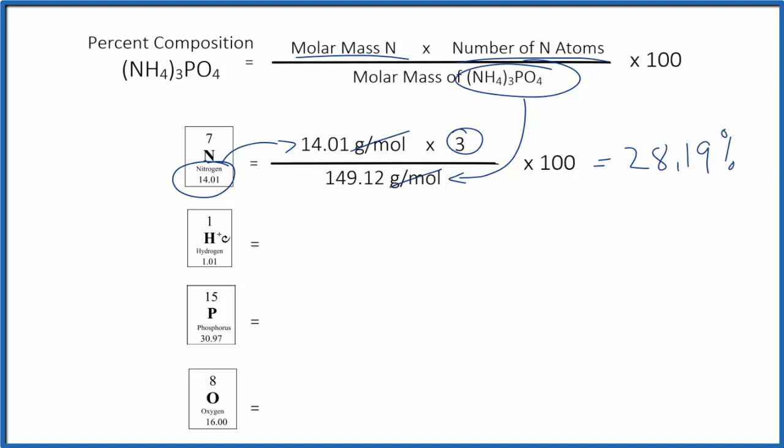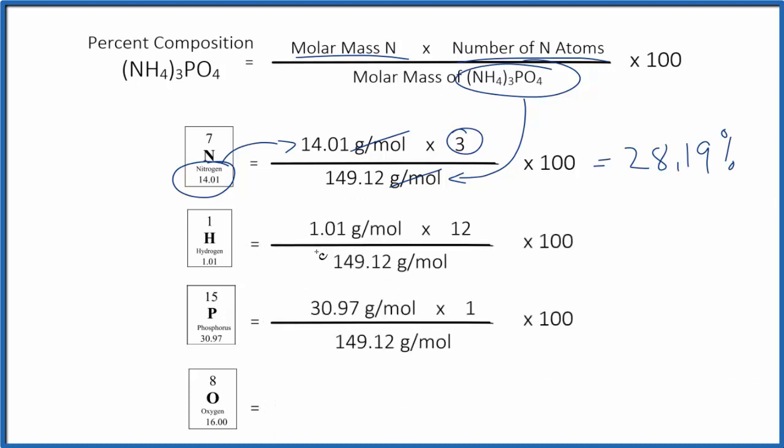We can find the percent composition by mass for hydrogen and then phosphorus the same way. For hydrogen, we have our molar mass of the hydrogen right here, and then we have three times four, so we have 12 of those. We multiply, get that number, divide, then multiply by 100. We get 8.13. For the phosphorus, that's 20.77 percent.